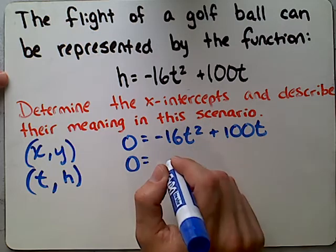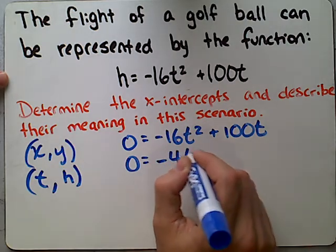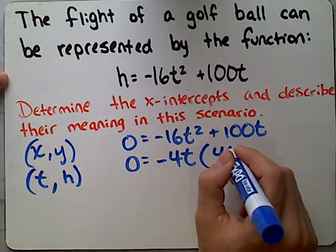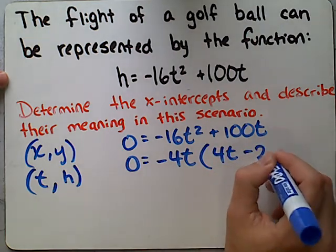So in this case, we can take out a negative 4 and the letter t. We're left then with 4t minus 25.